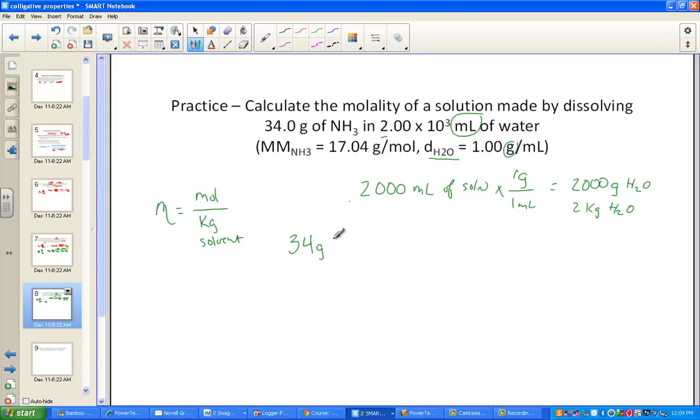So with that density, we're readily able to convert this volume unit into the mass unit we need for kilogram of solvent. We have some mole map work to do. 34 grams of ammonia, using the molar mass of 17.04 grams per mole. We've canceled the grams. Moles per kilogram of the solvent water converts us into molal units. 34 divided by 17.04 divided by 2, and we get 0.998 molal solution.